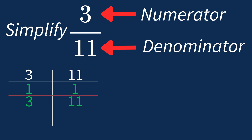This means we'll divide both the numerator and denominator by 1 to see if anything changes. First, we take the numerator, 3, and divide it by 1, which still leaves us with 3. Next, we take the denominator, 11, and divide it again by 1, which still leaves us with 11.